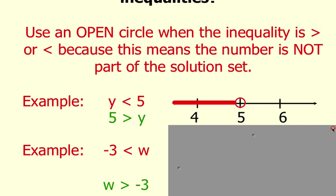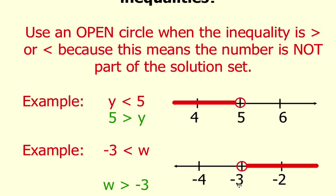So when you graph this, you're going to use an open circle on negative 3 because of the inequality symbol. And you have to ask yourself which side, is it the negative 4 or the negative 2, which side is greater than negative 3?